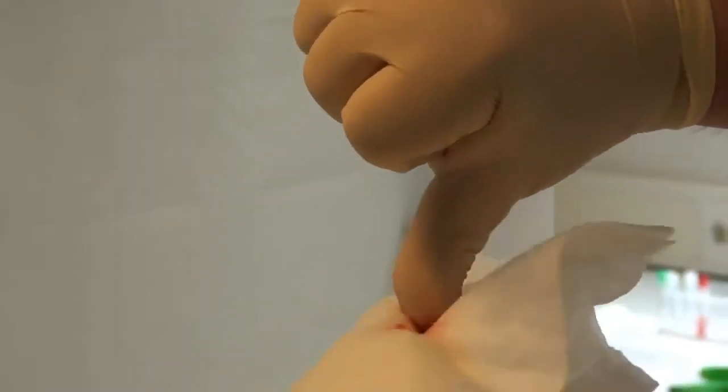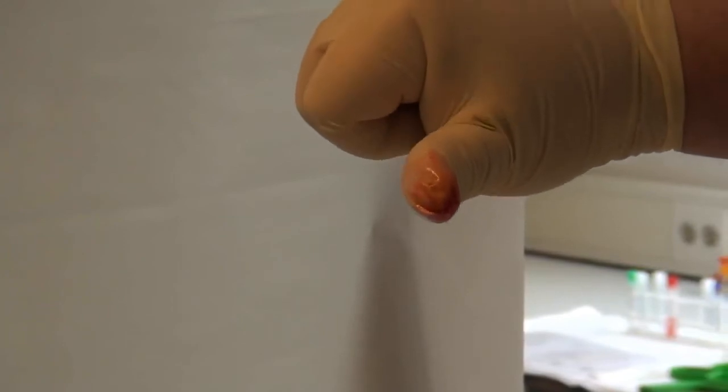Using a stain solution, the areas which are disinfected become visible. The goal is to disinfect the tip of the teat with circular movements and to also include the teat canal.